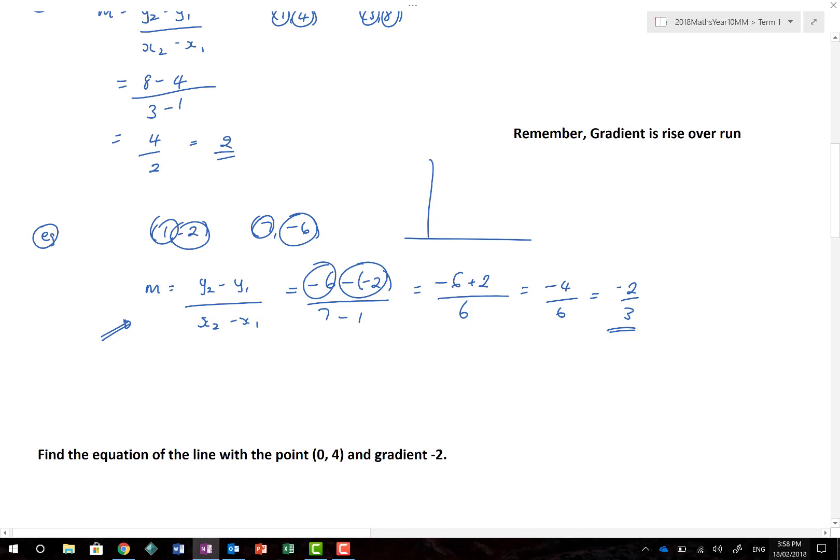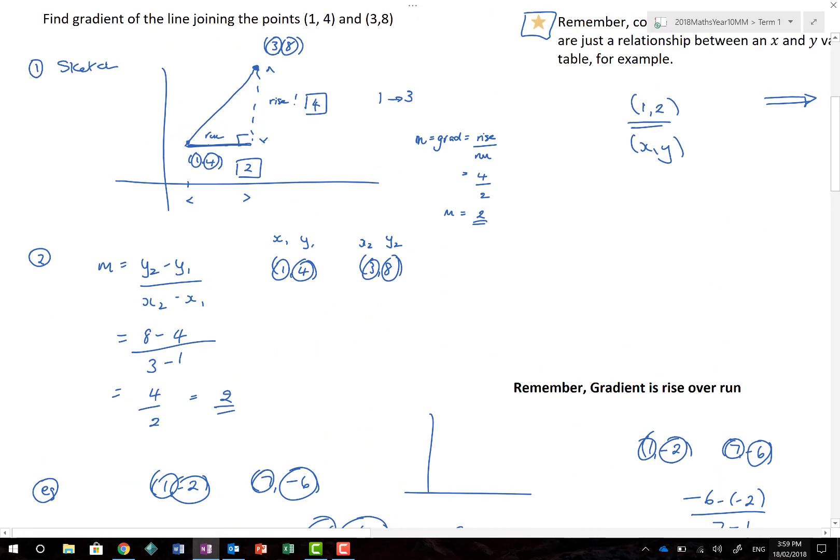Me, I do it another way again. I always just go, if I had 1, minus 2, and I had 7, minus 6, I always remember 2nd, minus 2nd, divided by 1st, minus 1st. So, 2nd, minus 2nd, over 1st, minus 1st. No different from this one here. It's just that once you get to my age of 147, you actually make things a little bit easier. So, that is how to find the gradient of a line joining those two points.